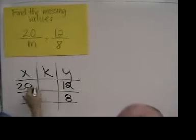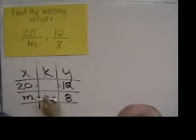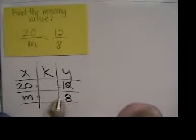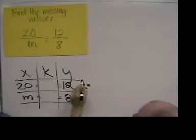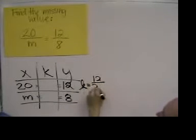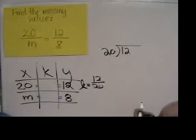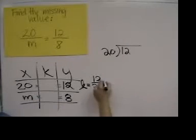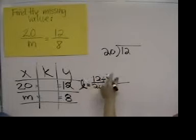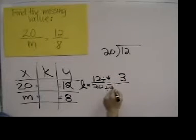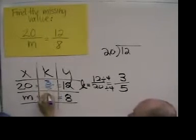Then we need to find K. K is that magic value that you multiply by 20 to get 12. So 20 times what is equal to 12? That answer can be found by taking 12 and dividing by 20. 12 over 20 can reduce by 4: 12 divided by 4 is 3, and 20 divided by 4 is 5. So 3 fifths is our K.